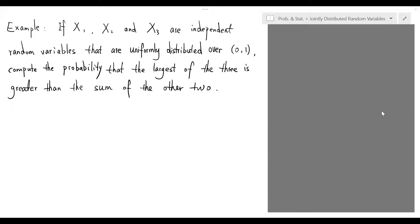In this video, we look at an example of applying order statistics to solve a problem. If X1, X2, and X3 are independent random variables uniformly distributed over an interval, compute the probability that the largest of the three is greater than the sum of the other two.